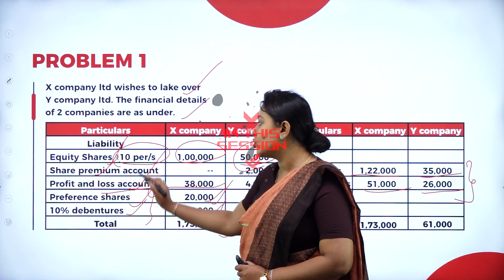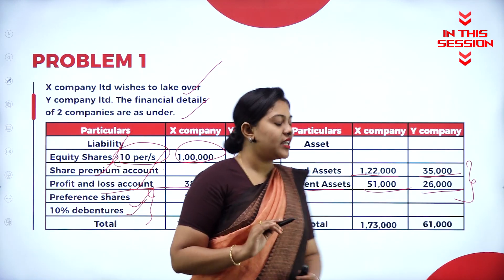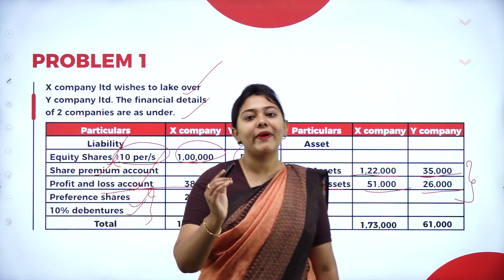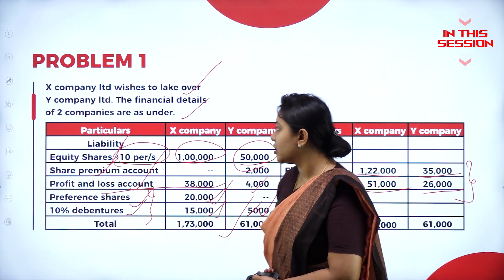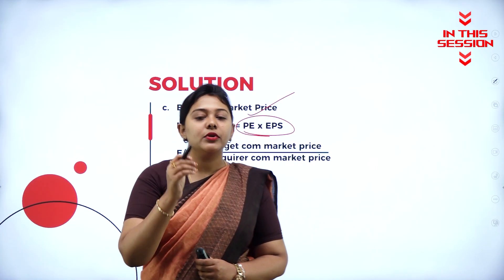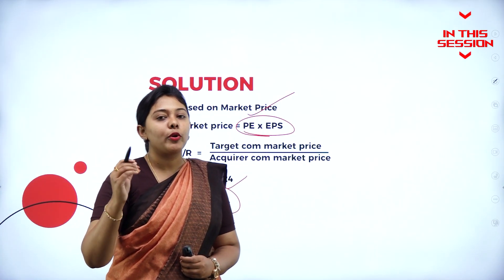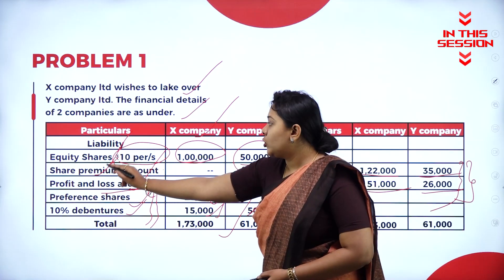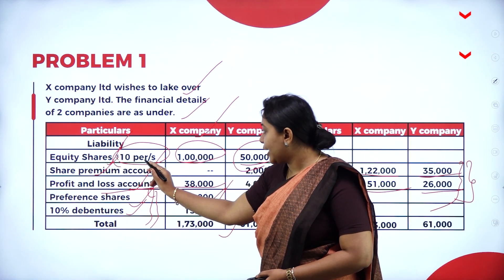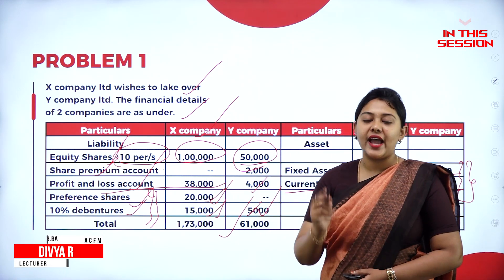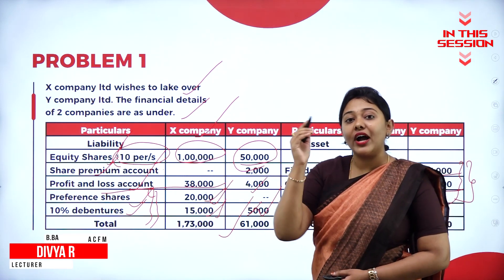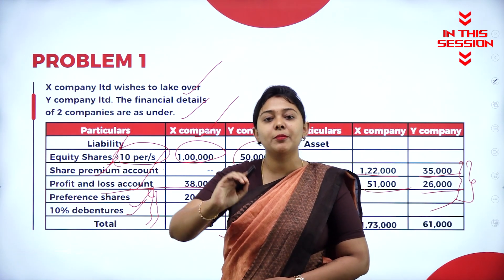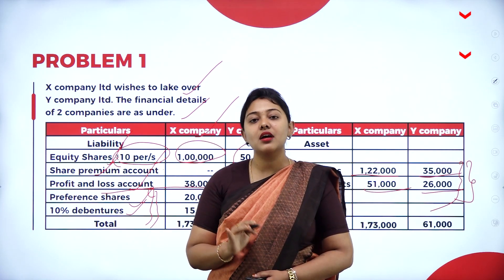Let us consider only these two — that is your liabilities and your assets — for calculation of exchange ratio based on net assets method. How do you get your EPS? Your EPS is equal to profit after tax divided by number of shares. Equity share of rupees 10 per share is 1 lakh. So 1 lakh is the value of the X company shares, but it is not the number of shares — it is the money. 1 lakh is the amount.